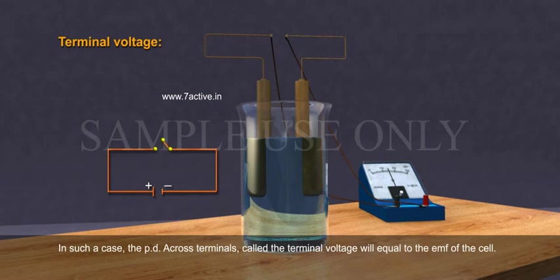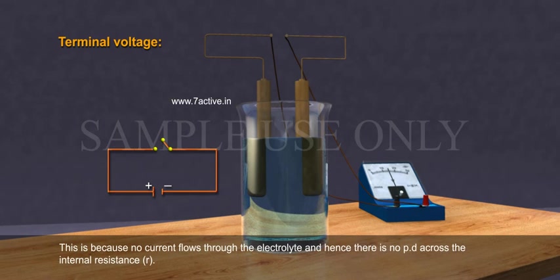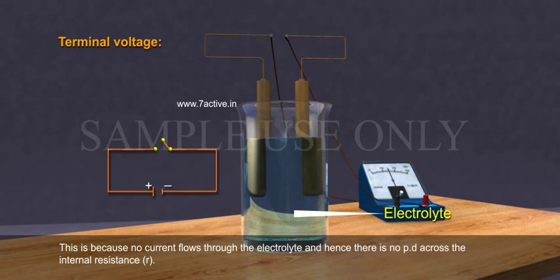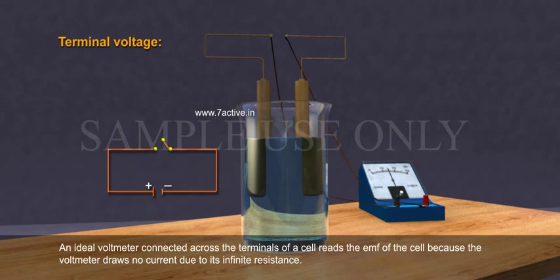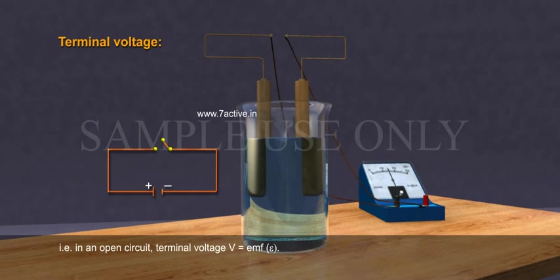Terminal voltage: when no current flows through the cell, the circuit is said to be an open circuit. In such a case, the PD across the terminals, called the terminal voltage, will equal the EMF of the cell. This is because no current flows through the electrolyte and hence there is no PD across the internal resistance. An ideal voltmeter connected across the terminals reads the EMF because it draws no current due to its infinite resistance. That is, in an open circuit, terminal voltage V equals EMF epsilon.